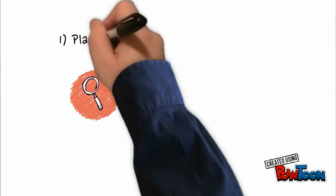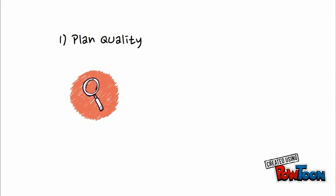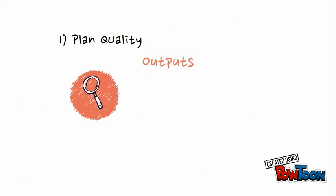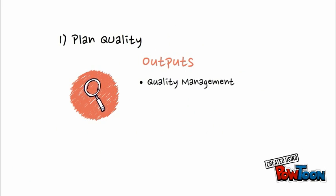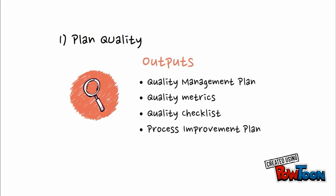Plan quality involves identifying the quality requirements for both the project and the product, and documenting how the project can show it is meeting those requirements. The outputs of this process include a quality management plan, quality metrics, quality checklists, and a process improvement plan.